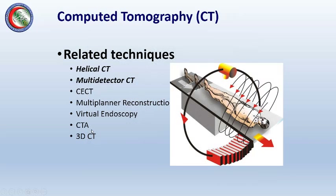Early machines took one image, moved the patient, then took another. Newer helical CT continuously rotates the tube around the patient, taking multiple images without gaps. Multi-detector CT now takes multiple slices per rotation — starting from two slices, then four, up to 320 slices per rotation — allowing high-resolution images with a lot of data and information.